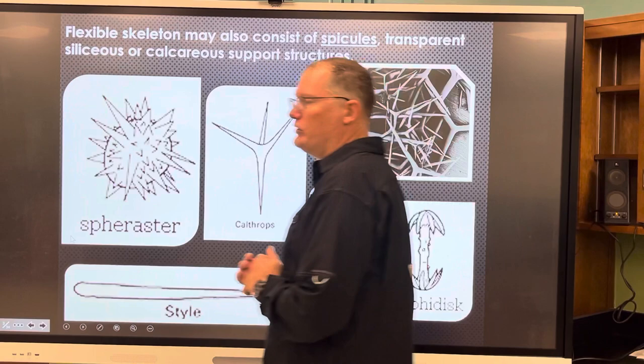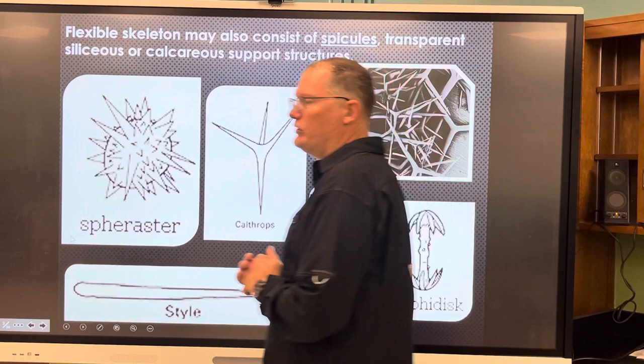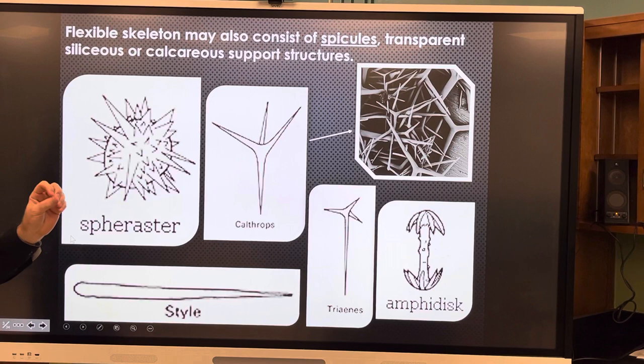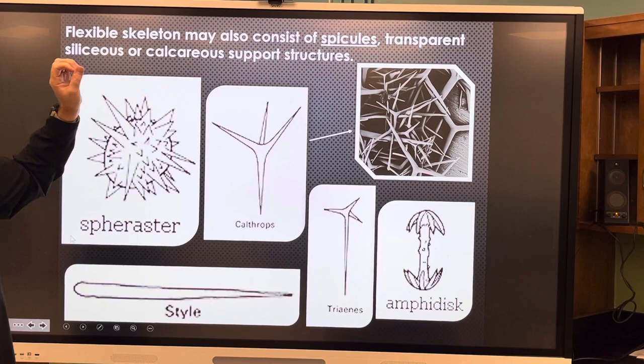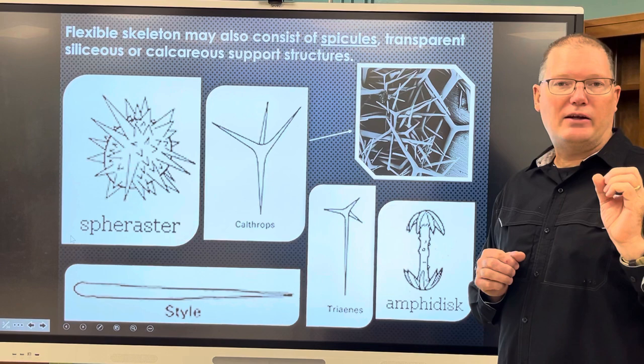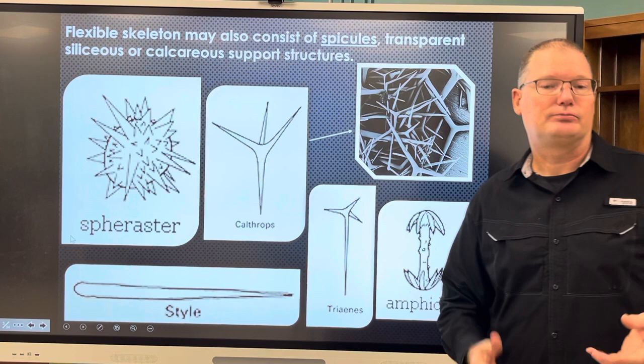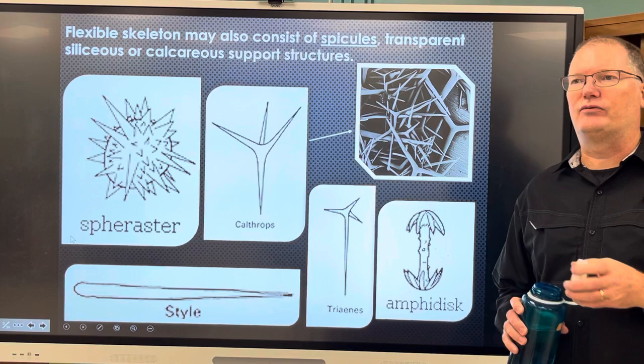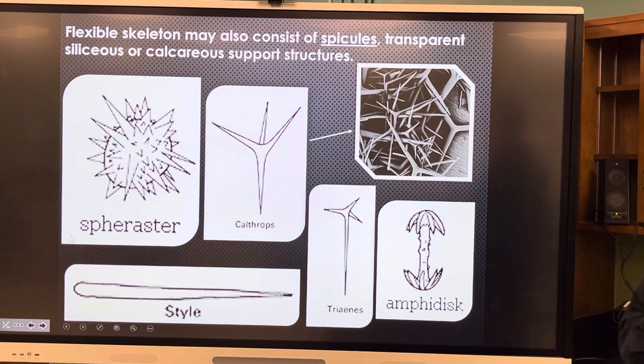The flexible skeletons may also have things called spicules in them. Spicules are transparent siliceous or calcareous support structures. Siliceous spicules are made of silica — silicon dioxide, the same glass that makes up window glass. Calcareous spicules are made of calcium carbonate. Depending on the species, you'll have different kinds of spicules made out of different things.